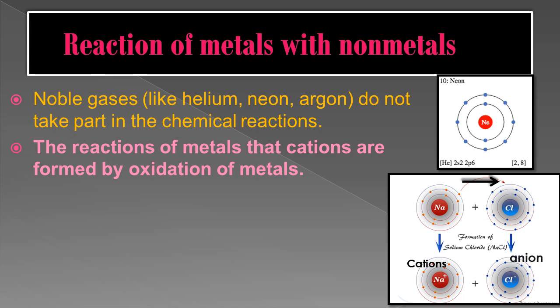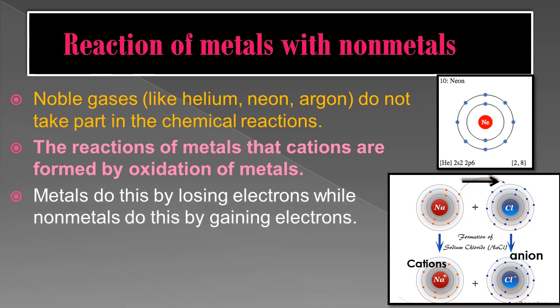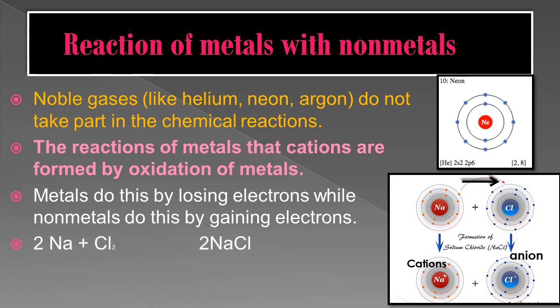Metals attain stability by losing electrons while non-metals do so by gaining electrons. The ionic compound sodium chloride (NaCl) is formed as sodium gives away one electron and chlorine takes up one electron: Na + Cl → NaCl. Similarly, magnesium and potassium form ionic compounds like magnesium chloride (MgCl2) and potassium chloride (KCl) respectively.